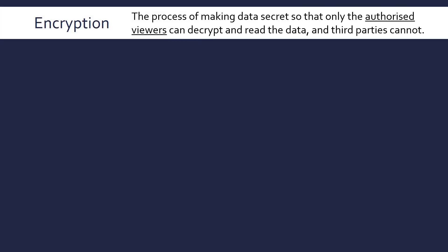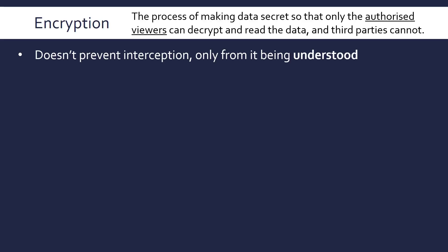The first measure we're going to be looking at is encryption. This is the process of making data secret so that only authorised viewers can decrypt and read the data, and any third parties can't. The idea of encryption as a security measure is that it doesn't prevent interception, but it prevents the data from being understood. It's very easy to intercept data — especially Wi-Fi, which is literally going through the air.